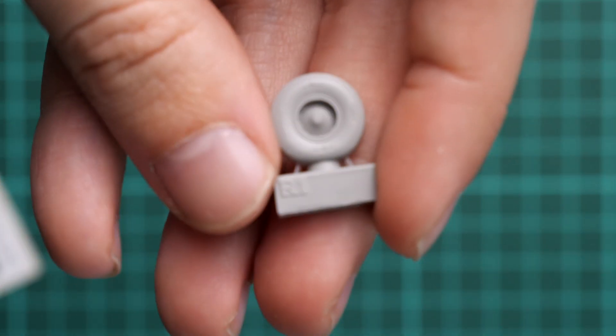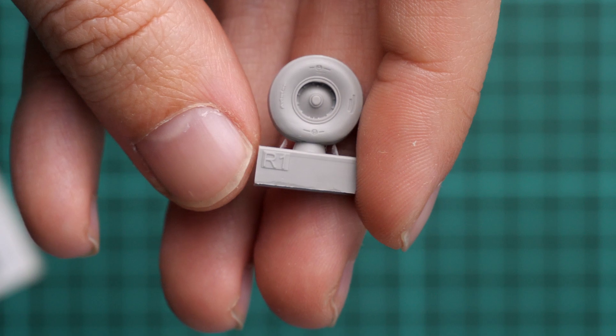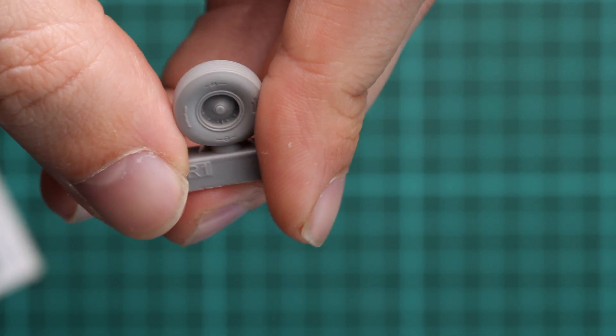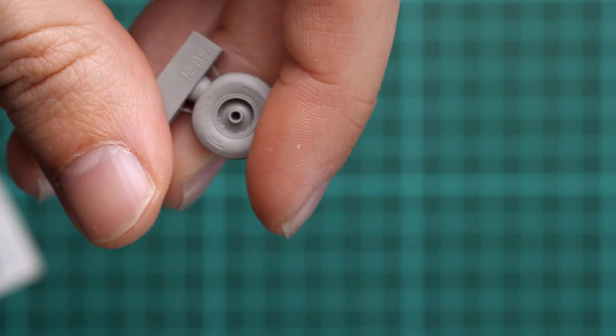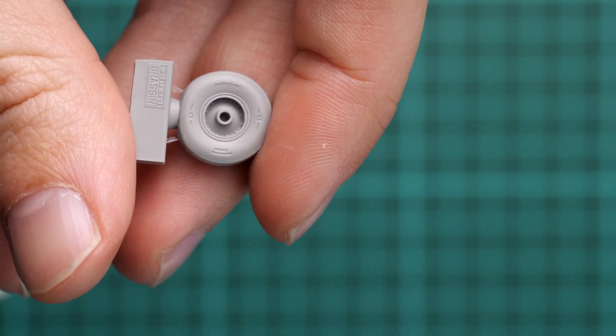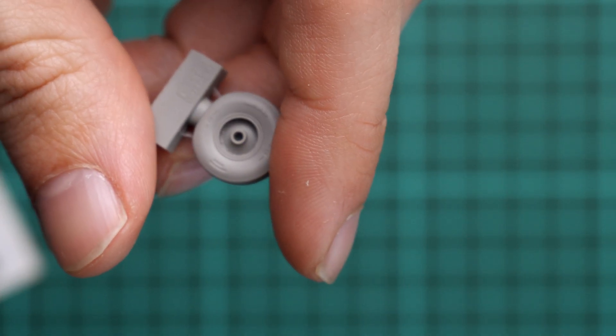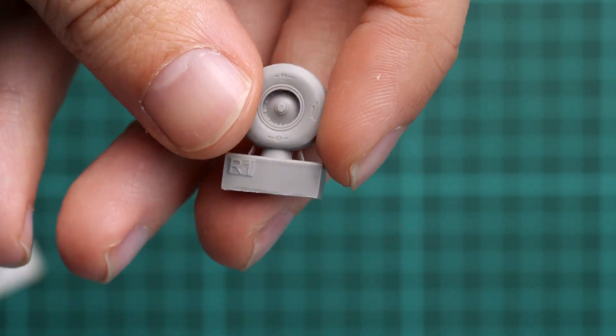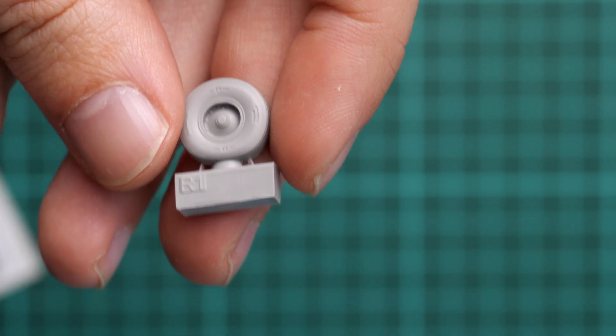Here is one of them. We have a pair of them in the set. And again we have nice tire wall features and the tire itself looks good. And again you can see this weight effect replicated on the bottom of the part. Note the attaching point to the resin base is not that thick, so it will be easy to separate it and not damage the actual part.